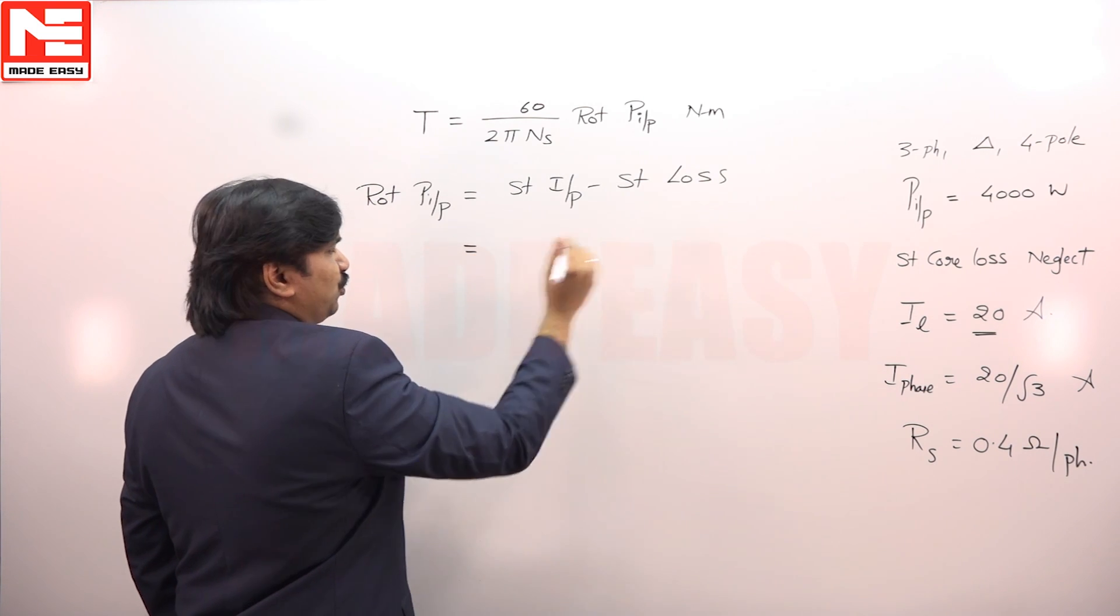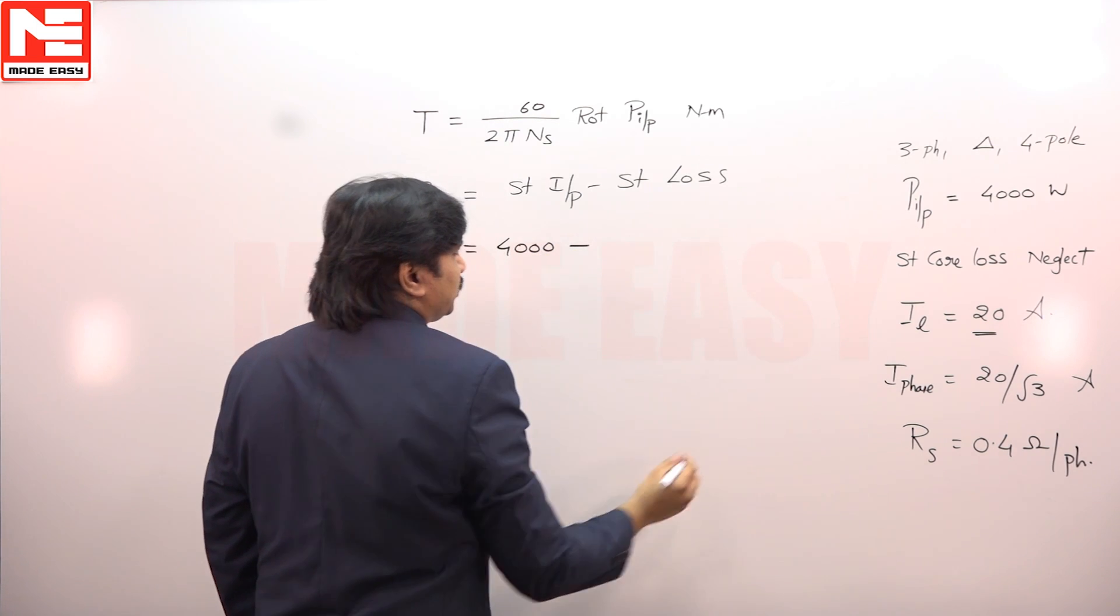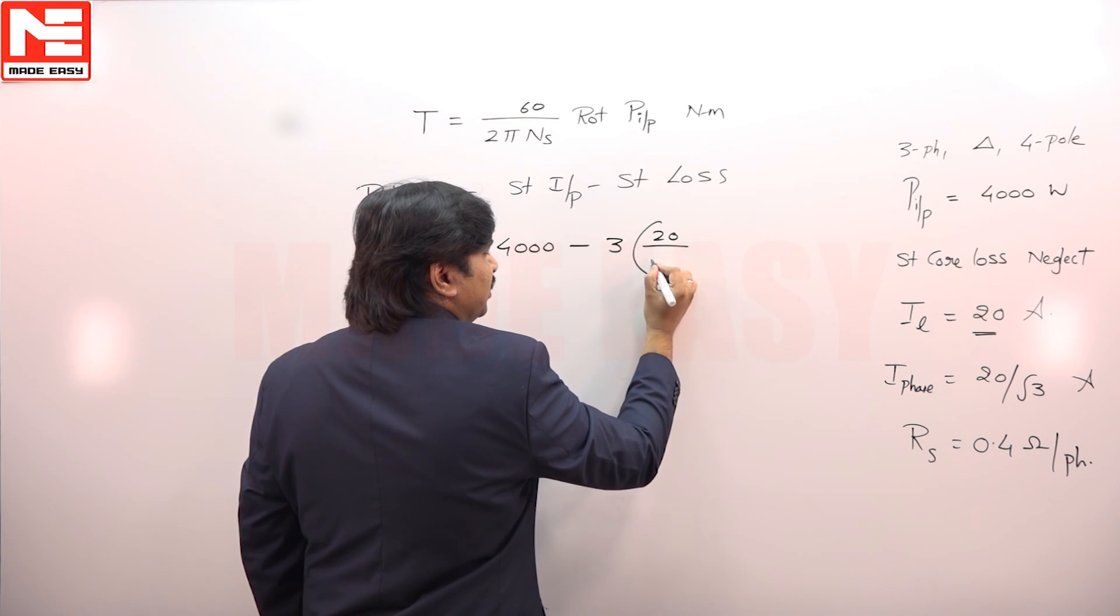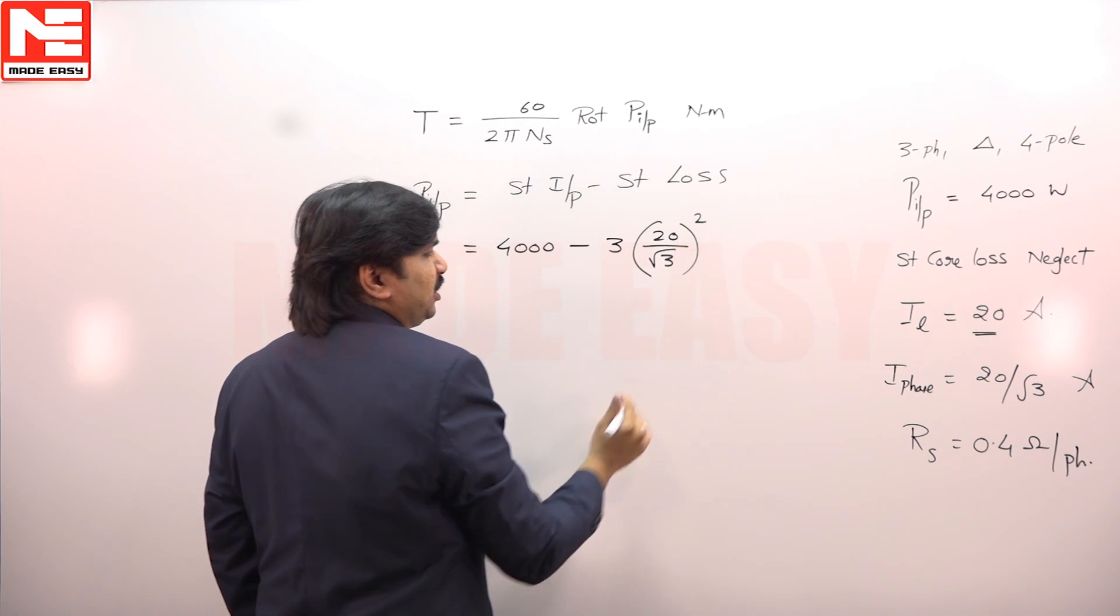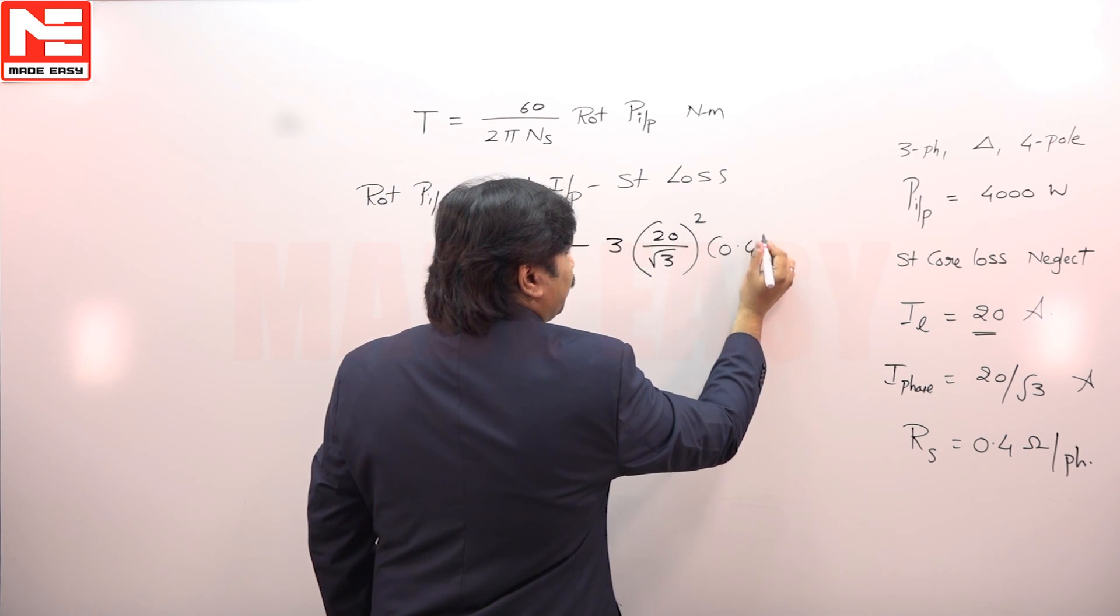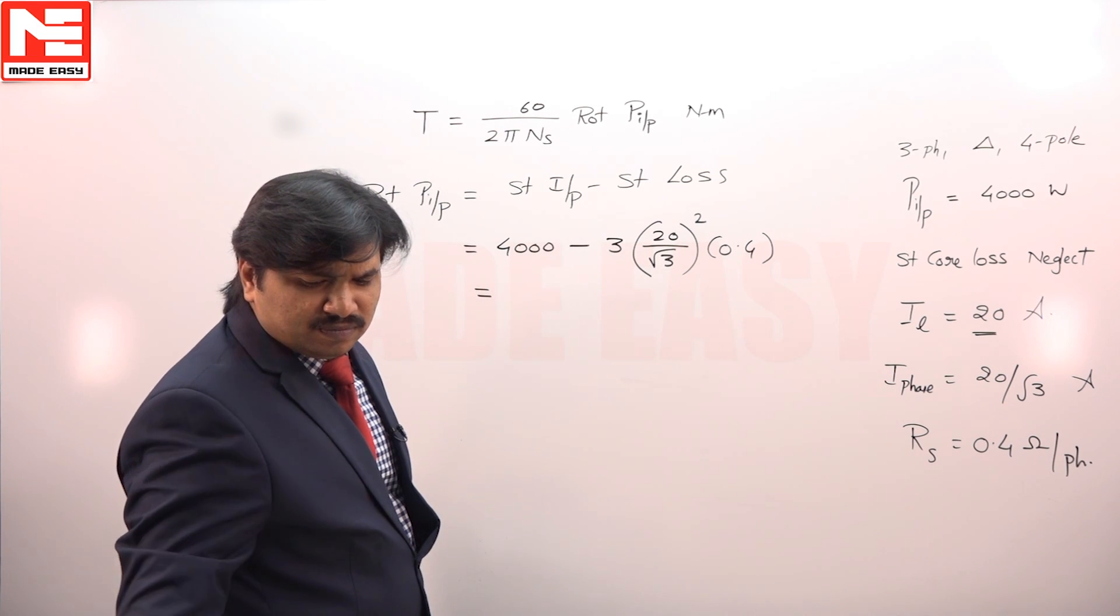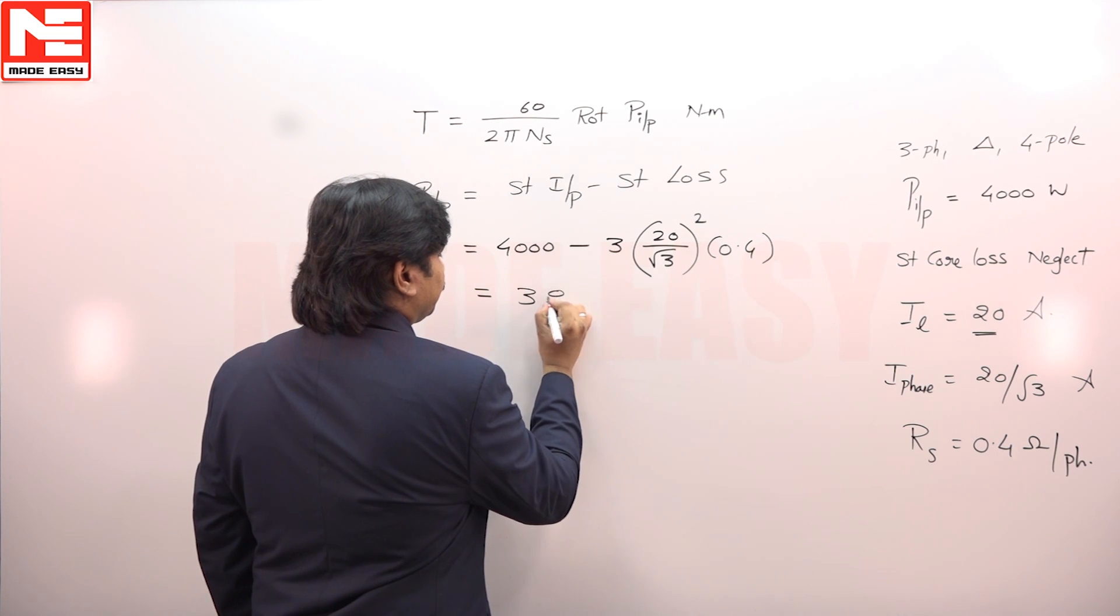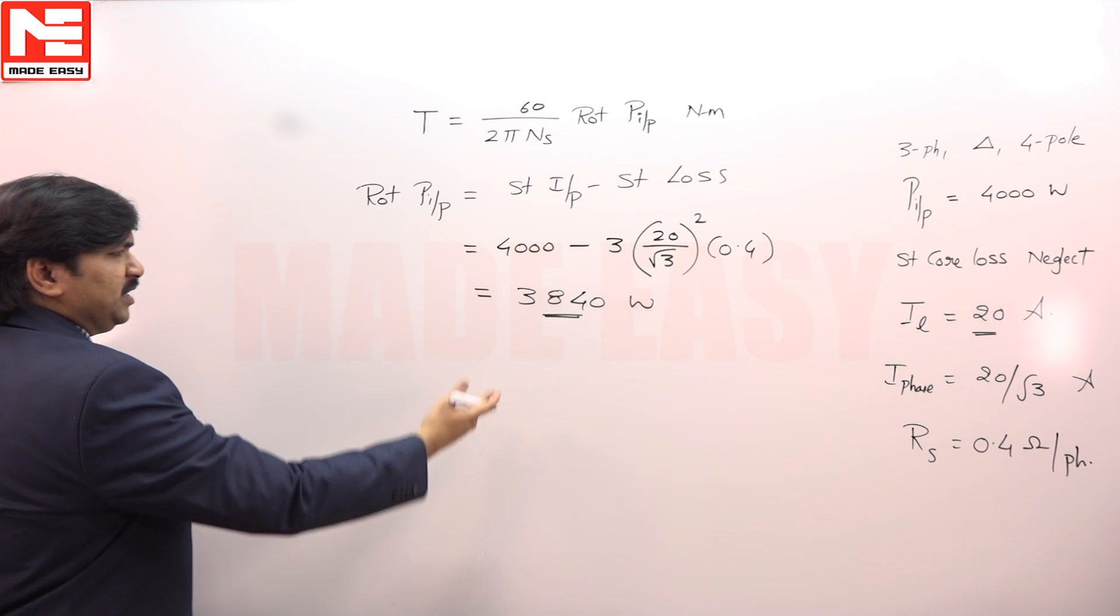Stator input is 4000 watts. Stator copper loss is 3 times I phase squared. What is I phase? 20 by root 3, because it is delta connected. So 20 by root 3 squared into 0.4. So the rotor input is 3840 watts. This is the rotor input.